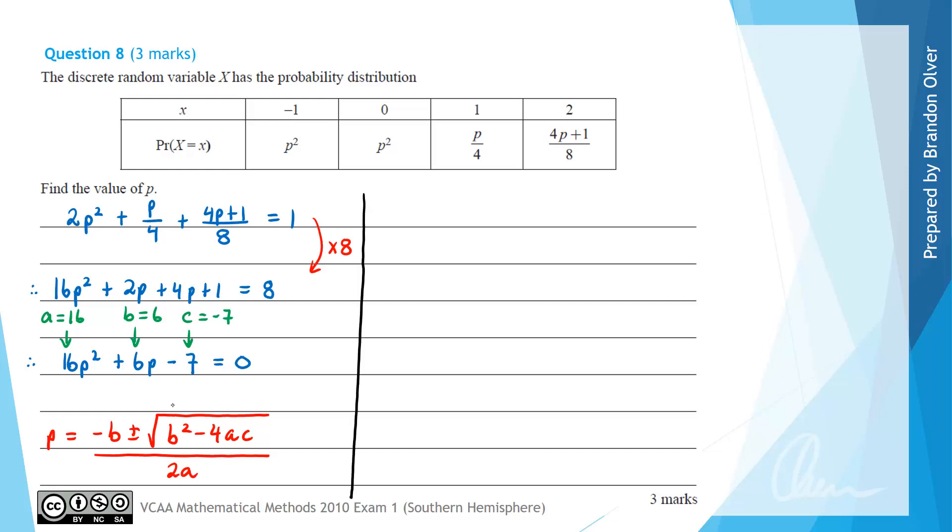Next up we have to substitute that into the formula. So therefore we find that p would equal minus b which is minus 6, and then we would have plus or minus the square root of, and we would have b squared which is 6 squared minus 4 times a which is 16 times c which is minus 7, and all of that would be divided by 2a, but a is 16.